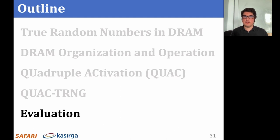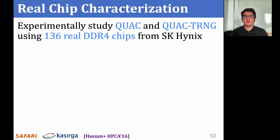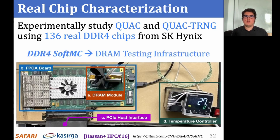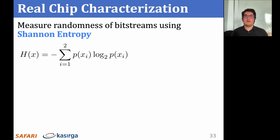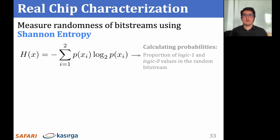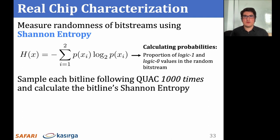Now I will present our evaluation of QuadTRNG's randomness characteristics, quality, and throughput. We conduct a characterization study on 136 real DDR4 chips from SK Hynix. We use a modified version of SoftMC, a DDR4 memory testing platform that lets us issue arbitrary DDR4 command sequences with any set of timing parameters to DRAM modules. We use rubber heaters and a temperature controller to maintain the temperature of the DRAM chips during our experiments. We use Shannon entropy as a measure of randomness in bit streams generated on DRAM sense amplifiers. Shannon entropy can be interpreted as the effective number of random bits in a bit stream. To calculate the Shannon entropy for each bitline, we repeatedly perform QUAC operations and read the sense amplifiers 1,000 times.